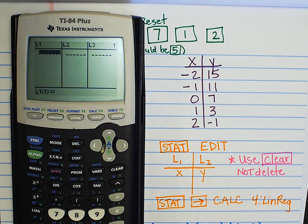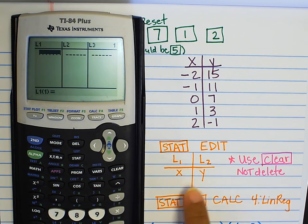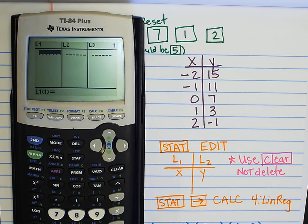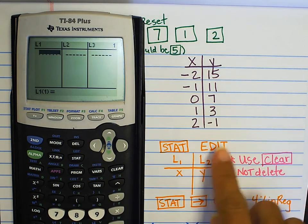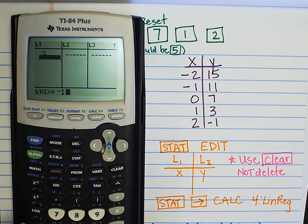You can see we have lists here. We're going to be using L1 for our X's and L2 for our Y's. So, all your X values will be listed in the list one. All your Y values will be listed in list two. So, here's my table. Negative two, enter. Negative one, enter. Zero, enter. One, enter. Two, enter.